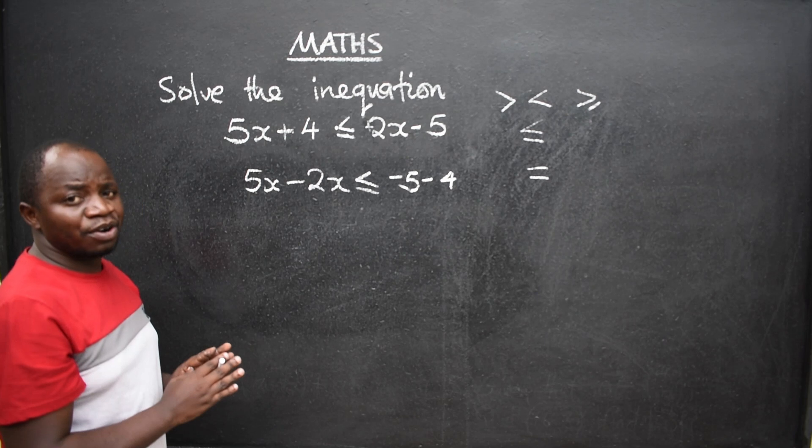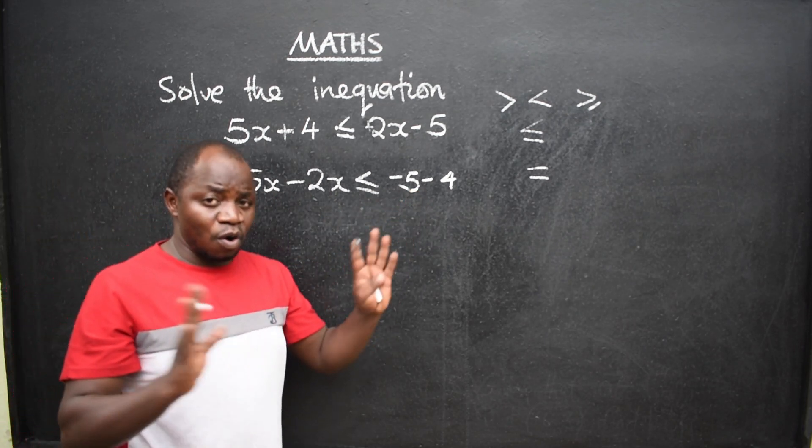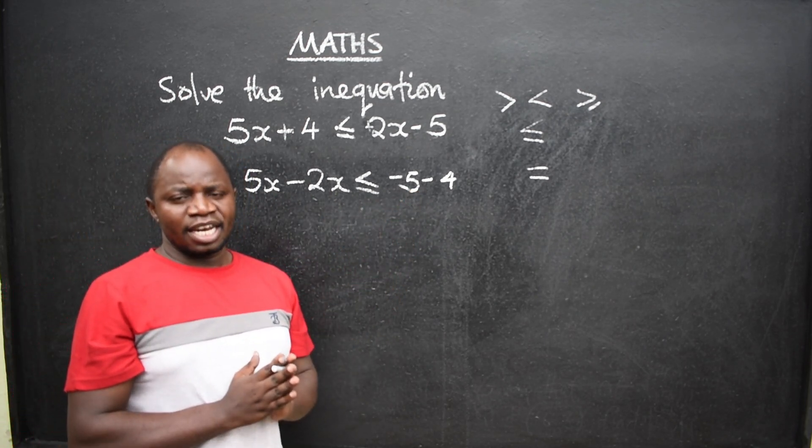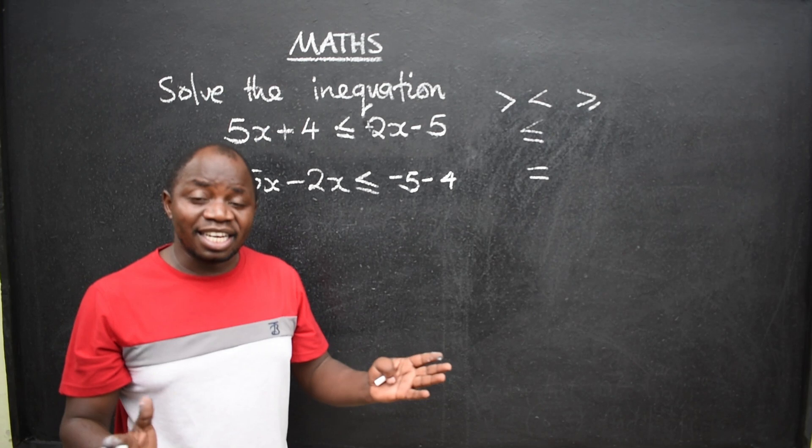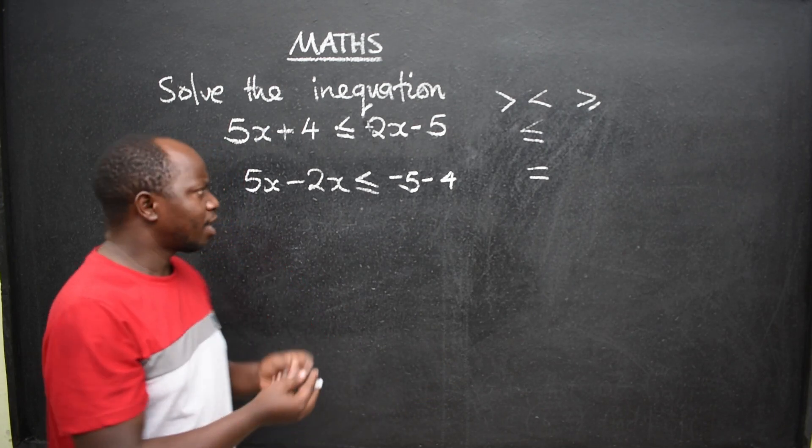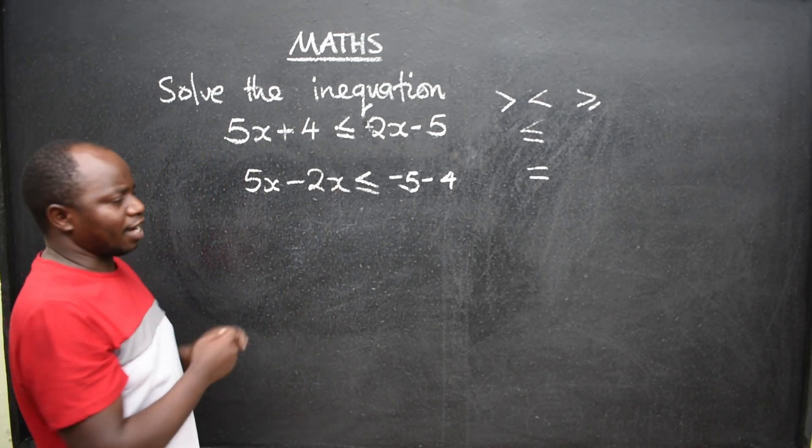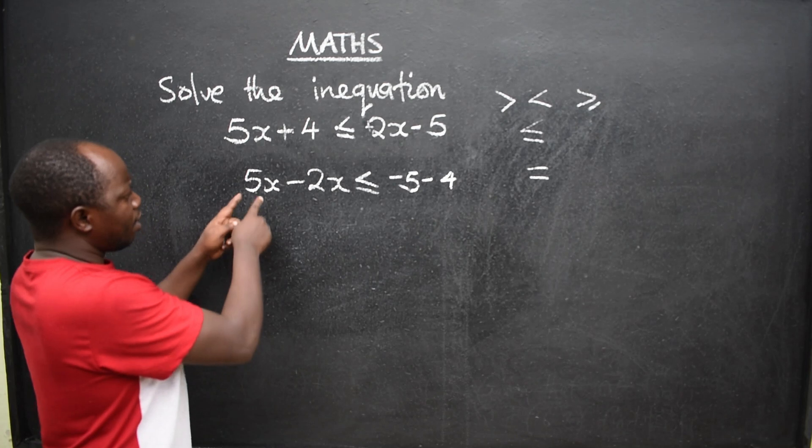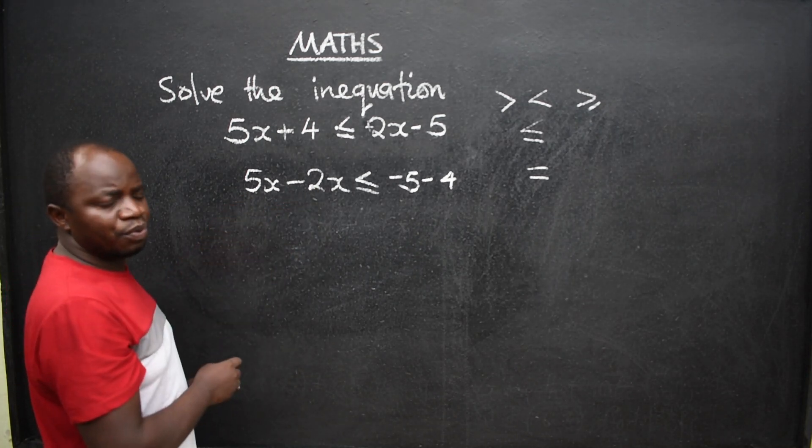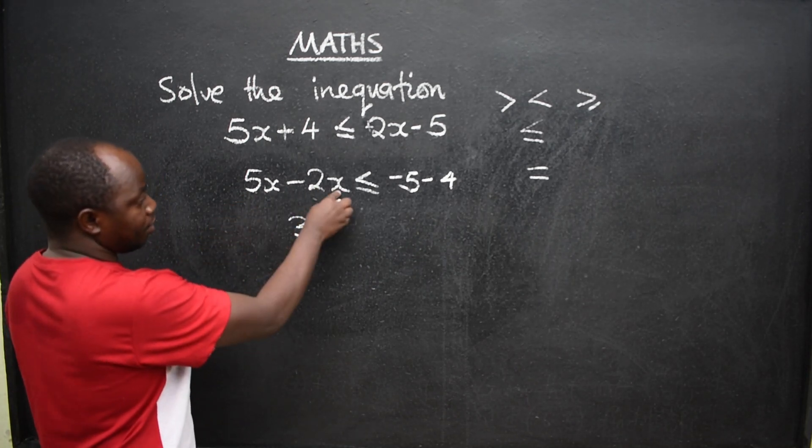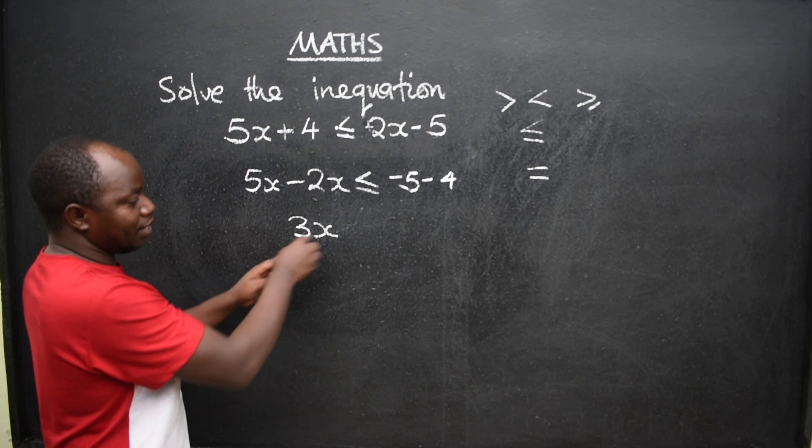Like that. At this point now, this is the stage we call collection of like terms. Now, like terms, remember, can be added, can be subtracted. So here we can subtract because these are like terms. 5 minus 2 will give us 3. Remember the variable x. So this is 3x.